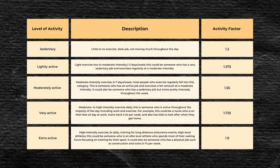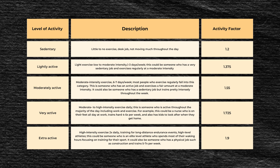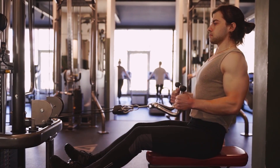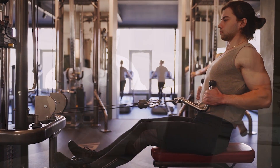Determining your maintenance calories is actually quite simple. After you calculate your estimated BMR, you simply multiply it by an activity factor appropriate for your current level of physical activity. There are five activity factors: on the very low end, 1.2 for somebody who is completely sedentary; on the high end, 1.9 for someone who is extremely active, such as a professional athlete. For example, somebody who lifts weights twice per week, runs twice per week for 30 minutes, yet has a sedentary job would likely be considered lightly active, and you'd multiply their BMR by 1.375.